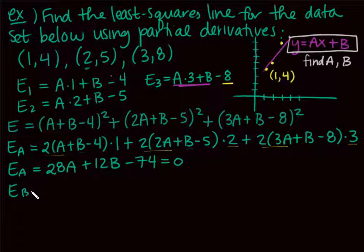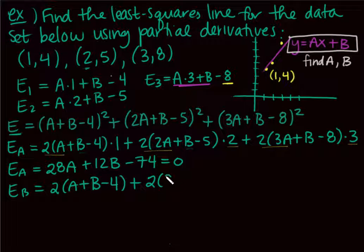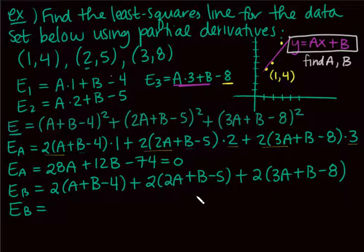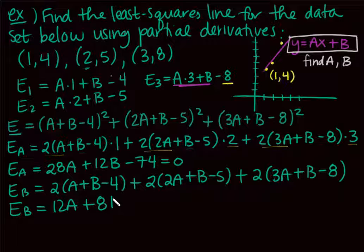Now I take the partial derivative with respect to b. Since b appears with coefficient 1 in each term, I just take the derivative of the outside and the b-derivative of the inside is 1. Simplifying: the a terms sum to 12a, the b terms sum to 8b, and the constants give −8 − 10 − 16 = −34. So the second equation is 12a + 8b − 34 = 0.